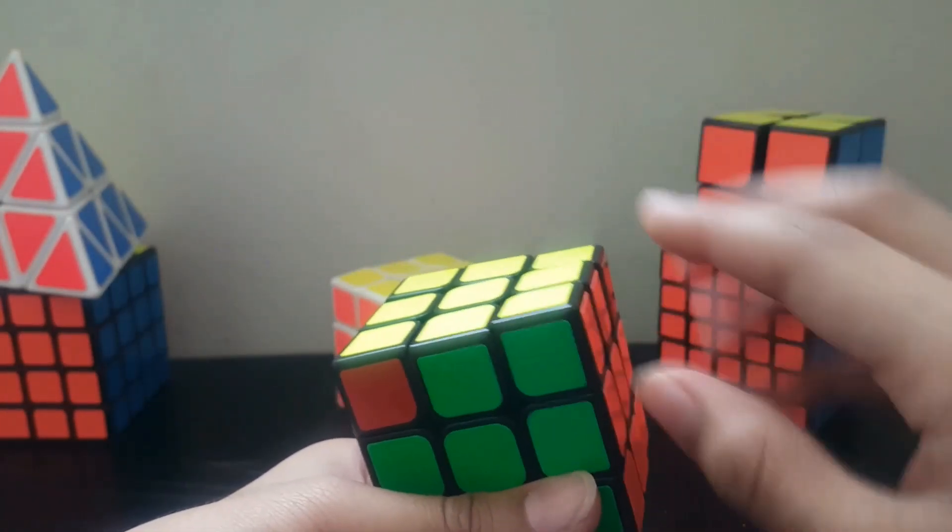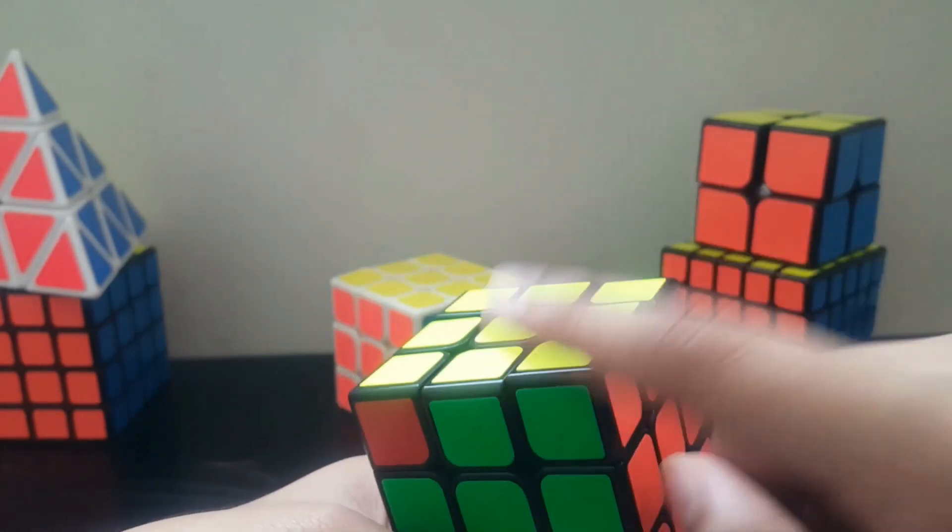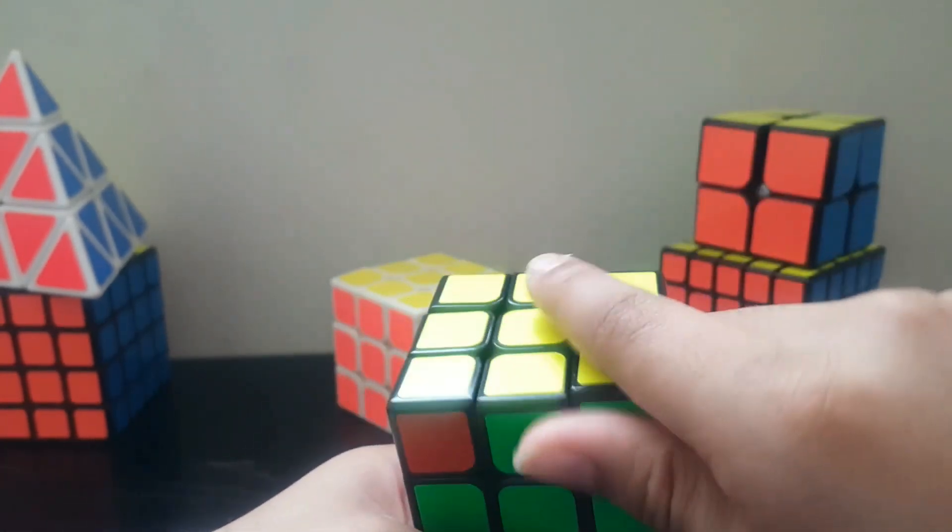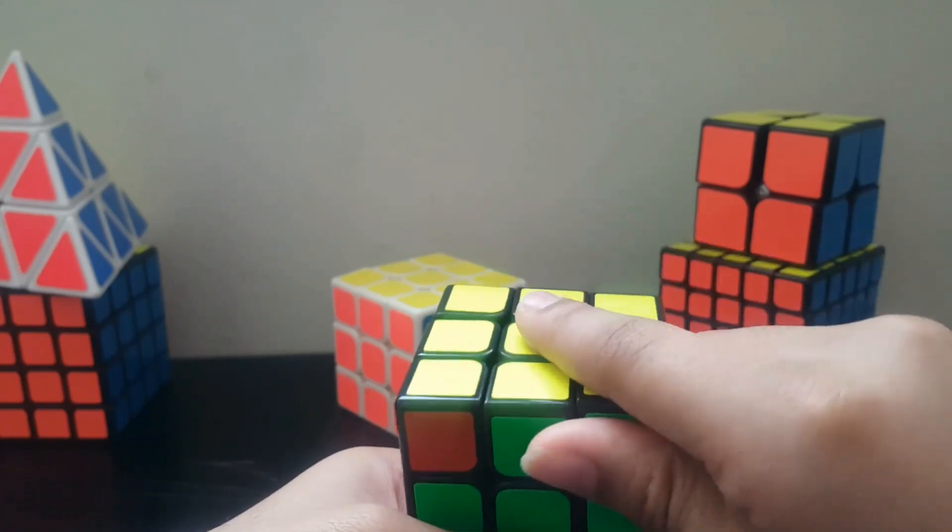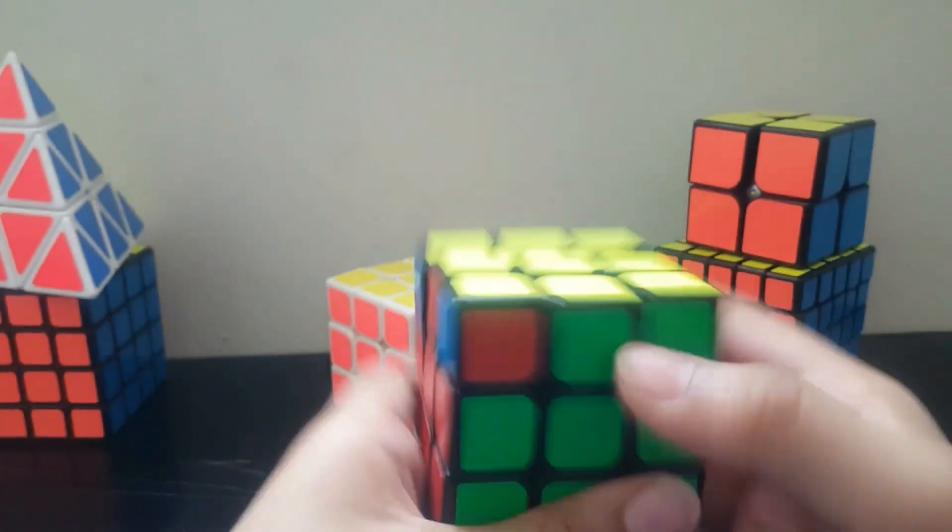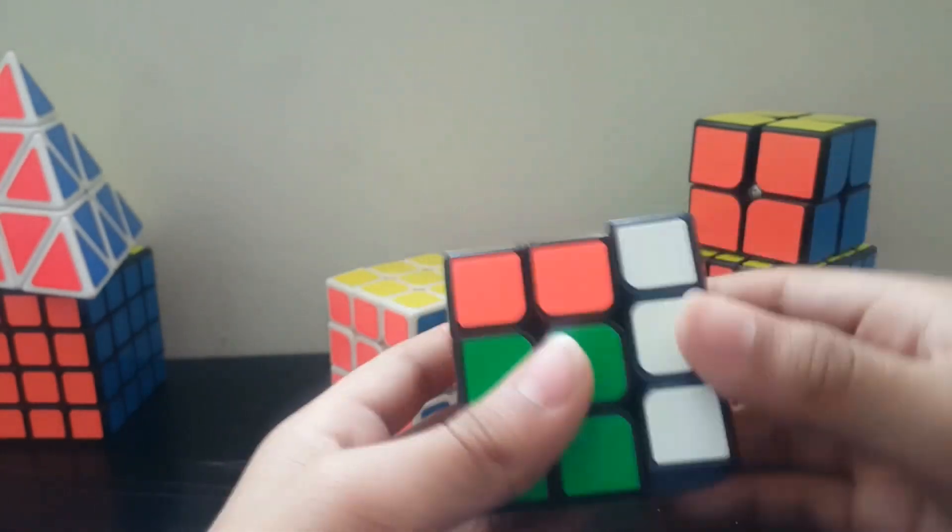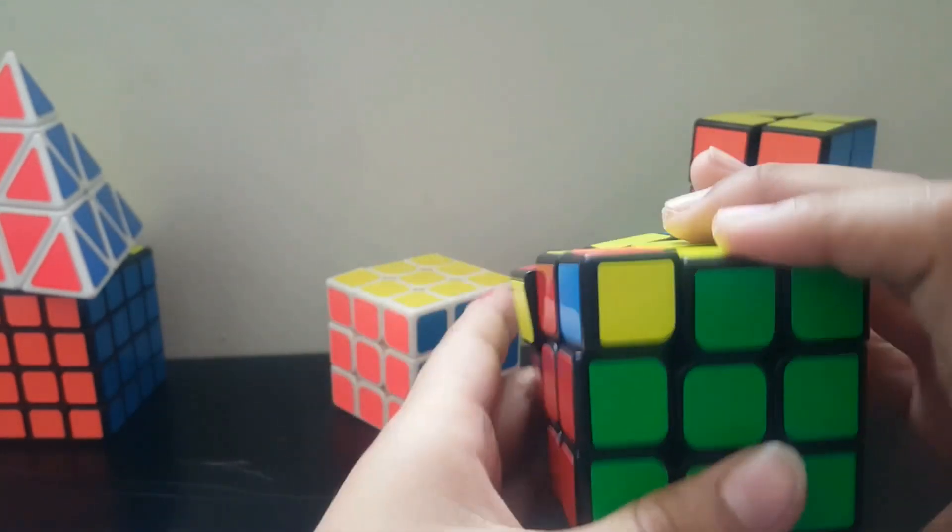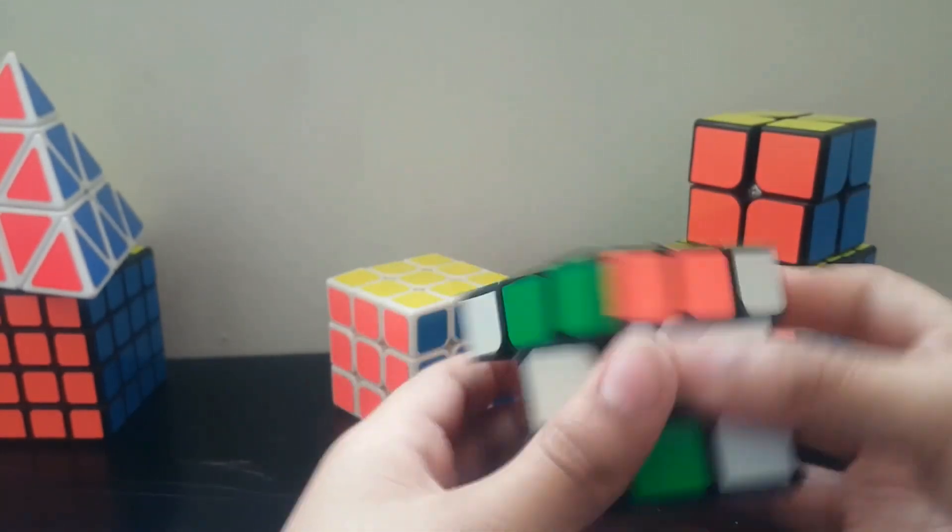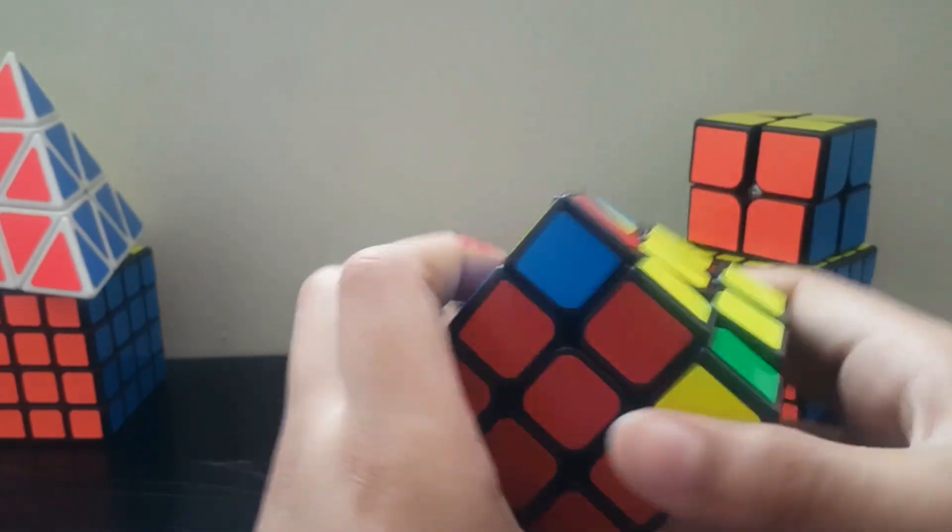So first of all, we have to take a solved corner piece like this. Now this corner piece is solved and kept here. Now we have to keep our cube like this and keep the corner pieces like this and do this method.